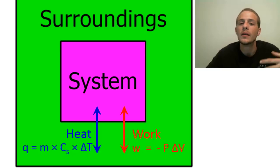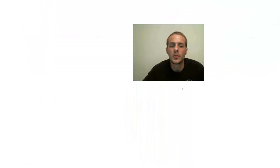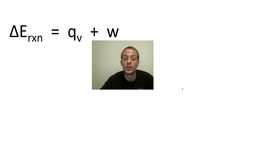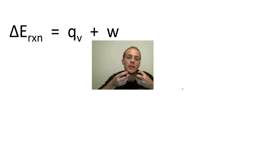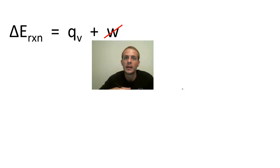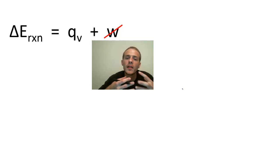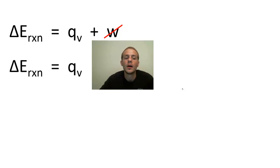Constant volume calorimetry is a much easier method by which to measure delta E. Delta E for any process or chemical reaction is Q plus W — heat plus work. By keeping the reaction in a constant volume environment, you're making the work term cancel out. If work is minus P delta V and there is no change in volume, delta V is zero, making work zero. So at constant volume, work is irrelevant, and all of the energy is forced to flow in the form of heat. Therefore, delta E for a chemical reaction at constant volume is just going to be Q_V, where the subscript V indicates the reaction is taking place at constant volume.